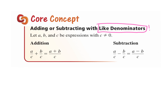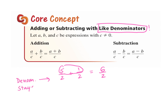So if we were adding two fractions — let's say 5 over 2 plus 1 over 2 — how would I add these together? I would add the numerators together, so that gives me 6 over 2, and the denominator stays the same. It's the same idea when subtracting.